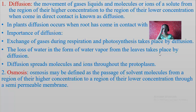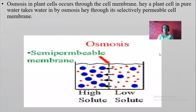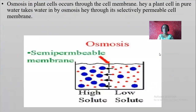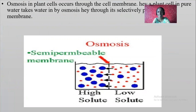Between cells there should be a semi-permeable membrane; transportation takes place through that semi-permeable membrane. For diffusion, a semi-permeable membrane is not required. Osmosis in plant cells occurs through the cell membrane. The plant cell in pure water takes up water by osmosis through its selectively permeable cell membrane.